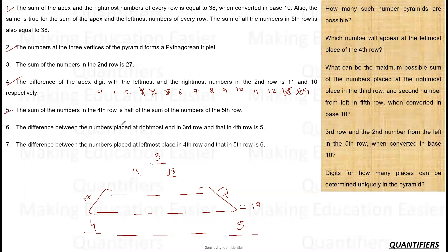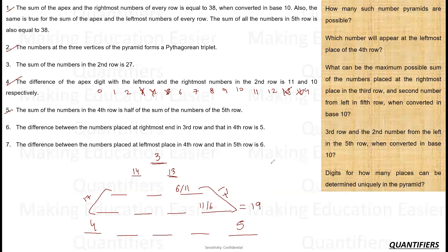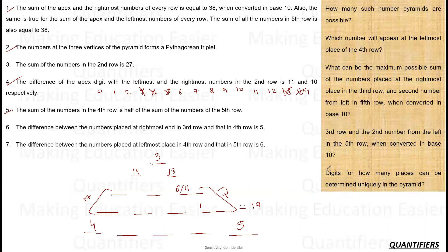The difference between the number at the rightmost place in the third row and in the fourth row is 5, and their sum is 17. Removing the difference of 5 from 17 leaves 12, so one number is 6 and the other is 11. The two possibilities are 6 and 11, or 11 and 6 in those positions.